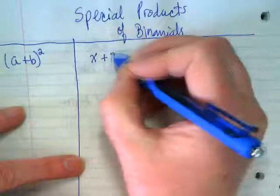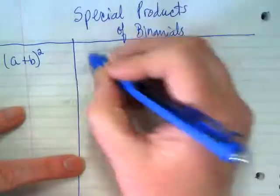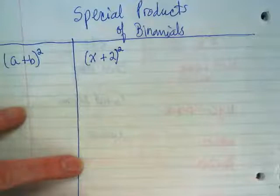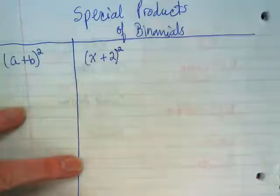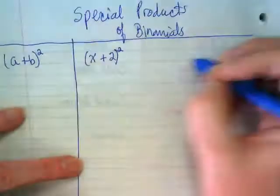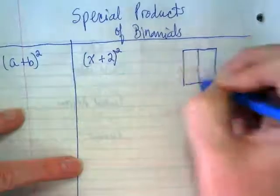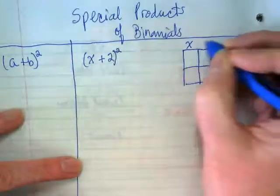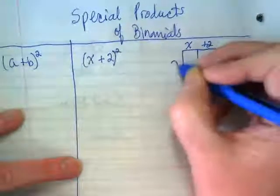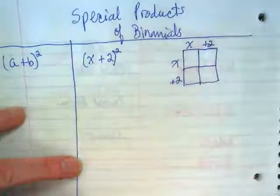This is when we have something like (x+2)². We could rewrite that as (x+2) times (x+2). So when we make our box for this, we do this, and down the side we put the same number because it's squared.